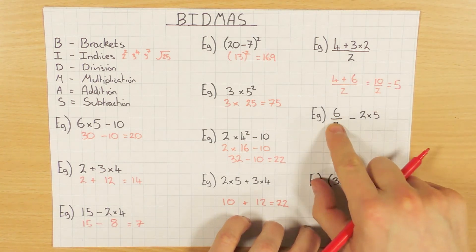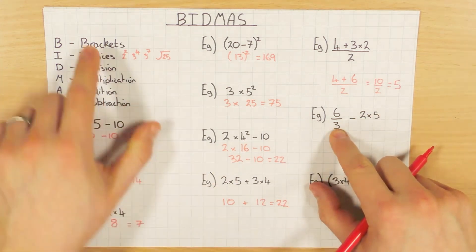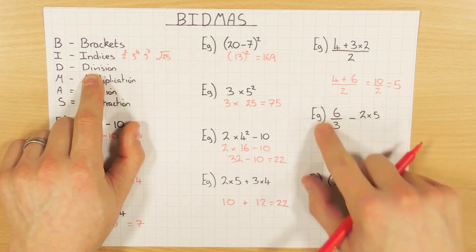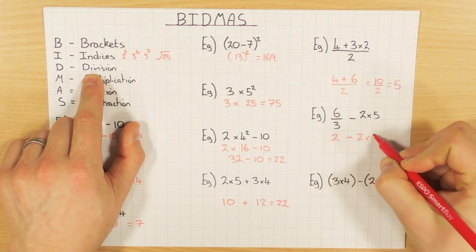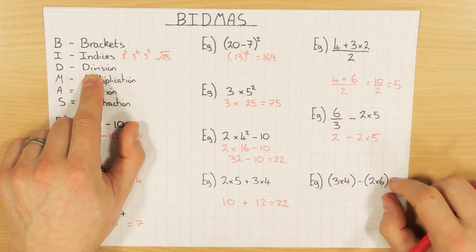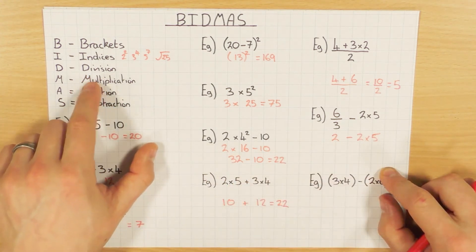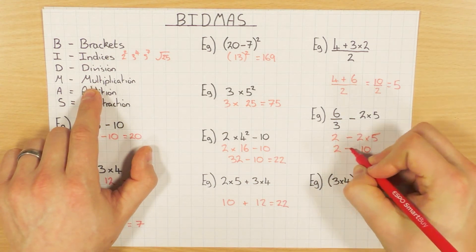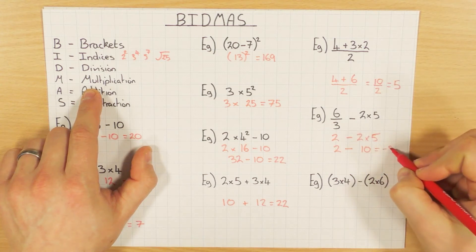This one is a little bit different — I have a division, a subtraction, and a multiplication, which means I should do the division first. In this example I can do it: 6 divided by 3 is 2, so I have 2 minus 2 times 5. Then multiplication comes before subtraction, so 2 times 5 is 10, and 2 minus 10 is minus 8.